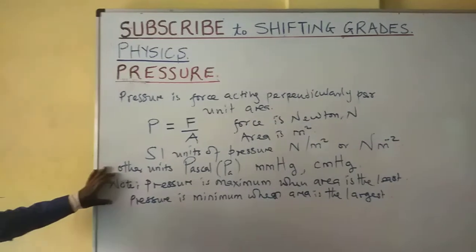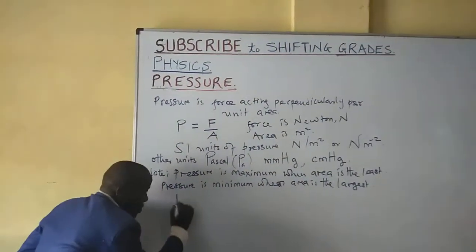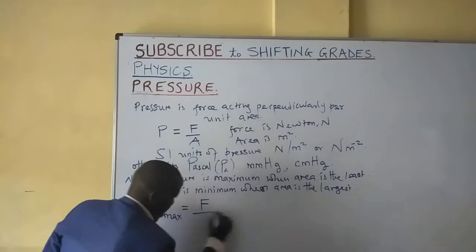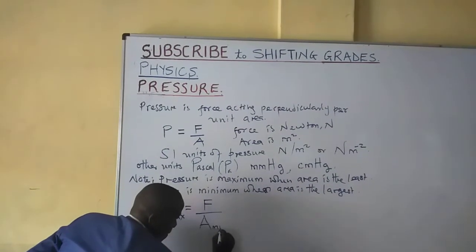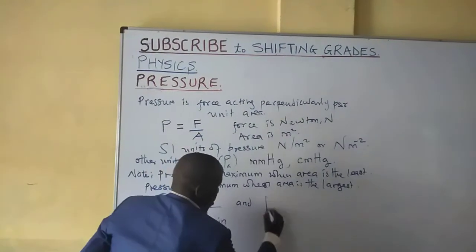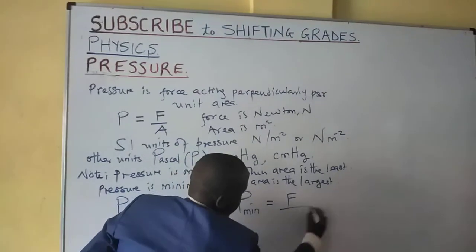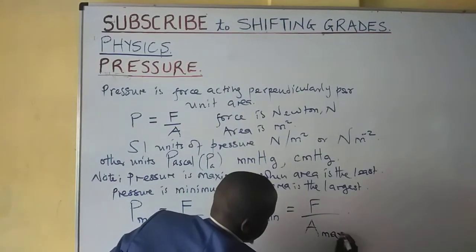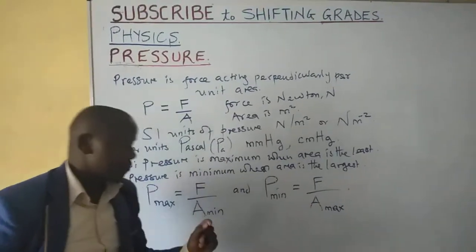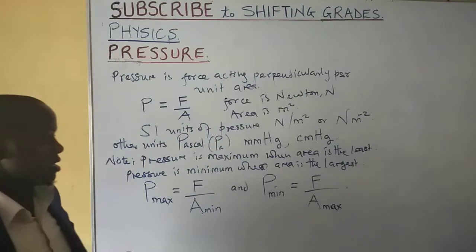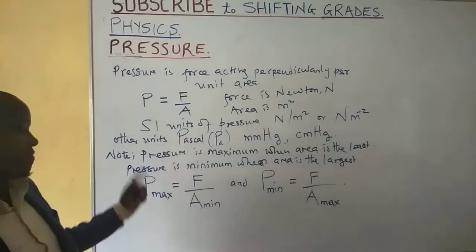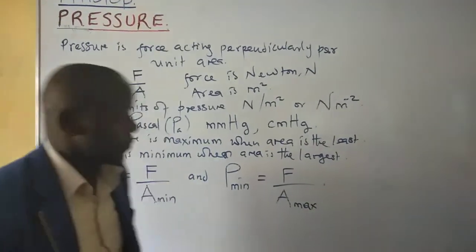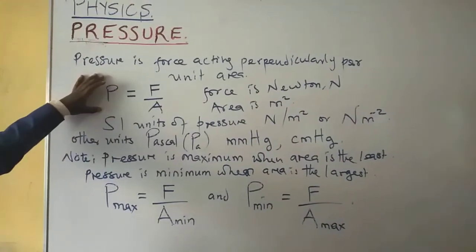To summarize: pressure maximum is given by force divided by minimum area, and pressure minimum corresponds to maximum area. For a certain force acting on different areas, that force gives maximum pressure on a very small area and minimum pressure on a large area.